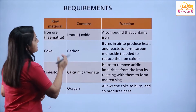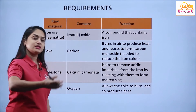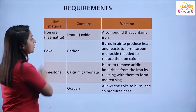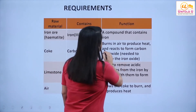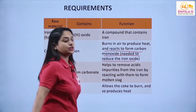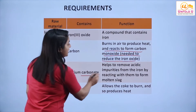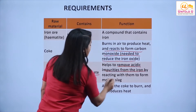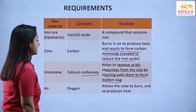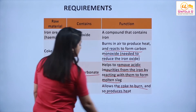Ore is a compound that contains iron, so if we are taking hematite ore, we are taking iron in oxide form to extract iron. Carbon in the form of coke burns in air to produce heat and reacts to form carbon monoxide, which is needed to reduce iron oxide. Limestone, or calcium carbonate, helps remove acidic impurities from iron by reacting to form molten slag. Air supplies oxygen, which allows the coke to burn and produces heat.